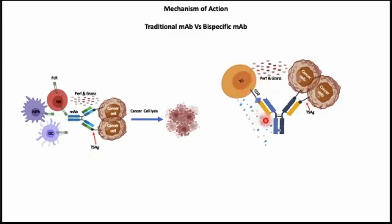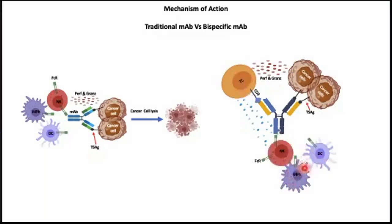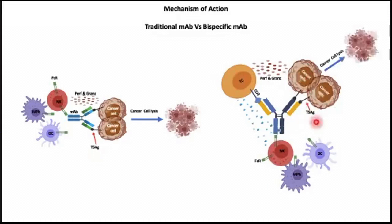And these cytokines stimulate and bring immune cells to the tumor microenvironment. And these immune cells, some of them, like NK cells, have FC receptors, so they can bind to the bispecific monoclonal antibody and help in the killing and lysing of these cells. So the bispecific monoclonal antibody provides a multi-hit against the cancer cell, as the immune cells that have FC receptors can bind to the FC region here and can recognize the cancer cell and kill it.